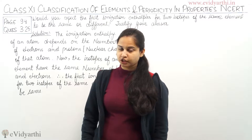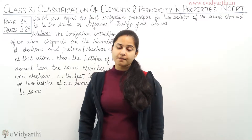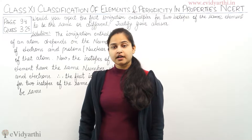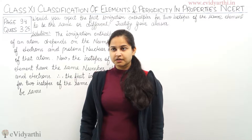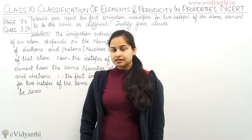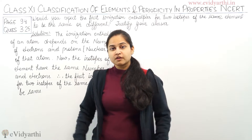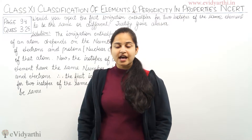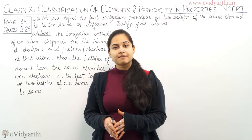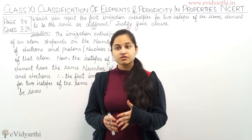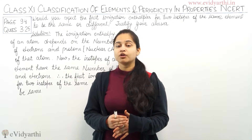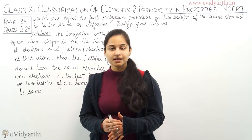The ionization enthalpy depends on the number of electrons and number of protons. Since these are two isotopes of the same element, they would be having the same number of electrons and protons. Hence, the first ionization enthalpy for these two isotopes belonging to the same element would be the same.